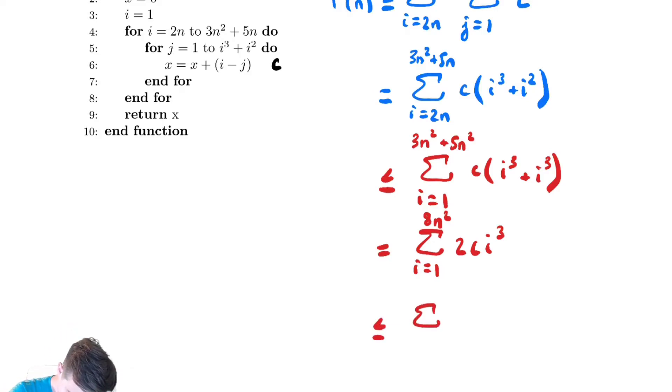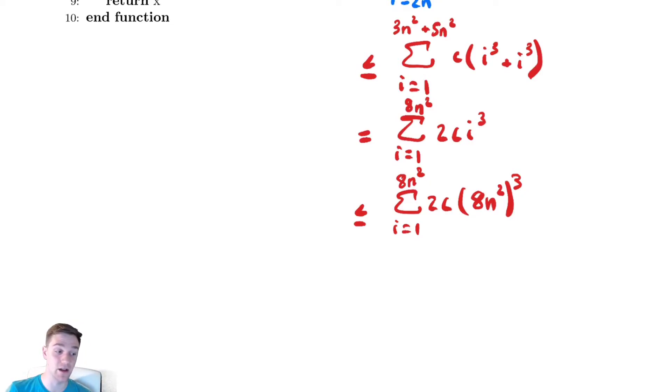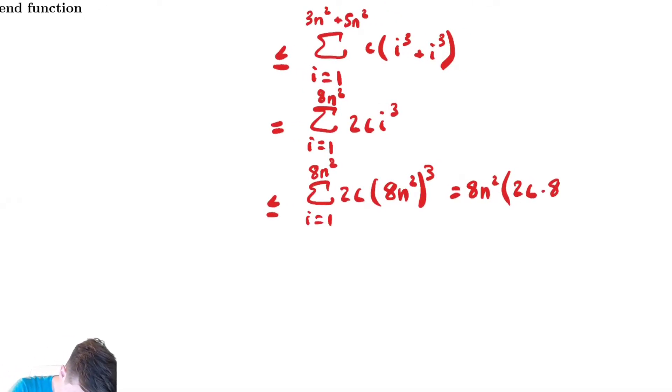So, might as well just keep with the bounding. This is less than or equal to the sum from i equals 1 to 8n squared of 2c times 8n squared quantity cubed. We now have eliminated the summation index and are adding up a fixed thing, 2c times quantity 8n squared cubed. Ugly, but it's fixed. A fixed number of times. So, this is equal to, we have 8n squared copies of 2c times 8 cubed. Let me write that a little nearer. 2c times 8 cubed n to the 6th. Why n to the 6th? We have n squared cubed 2 times 3 is 6.